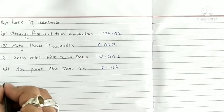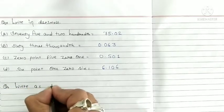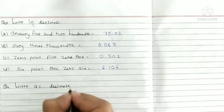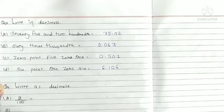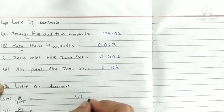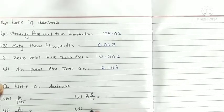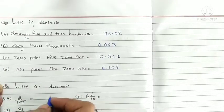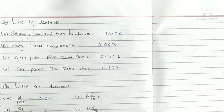Next, write as decimals. First, two upon hundred, then second eighty one upon thousand, then C eight upon ten, and D four two upon hundred. So two upon hundred is equal to 0.02, eighty one upon thousand, so 0.081.